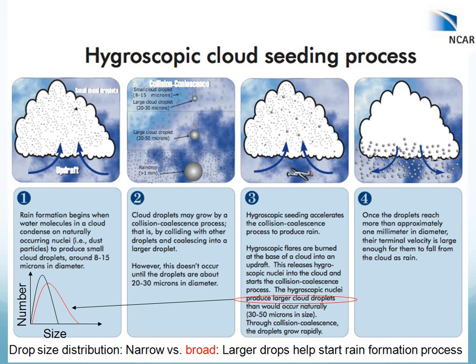The basis for this statistical analysis is the hygroscopic cloud seeding conceptual model. The idea is that rain formation begins when water molecules condense on naturally occurring nuclei and produce a distribution of small cloud droplets. In a more continental or polluted scenario, you end up with a narrower droplet spectra; in a cleaner maritime environment, you get a broader spectra. The next step for precipitation to form is the collision-coalescence process, where larger droplets fall faster and collect smaller droplets to grow to precipitation-sized droplets. However, this typically doesn't occur until you have at least 20 to 30 micron-sized droplets. The idea with hygroscopic seeding is to accelerate the collision-coalescence process by burning hygroscopic flares at cloud base, releasing hygroscopic nuclei that help form larger droplets that initiate the warm rain process.